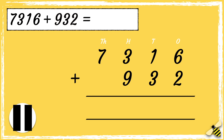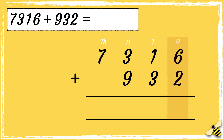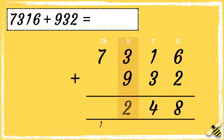Pause the video to give you time to work out the answer. Press play when you're done. First we add the ones: six add two equals eight. Then we add the tens: one add three equals four. Then we add the hundreds: three add nine equals twelve. Then we have the thousands: seven add one equals eight.